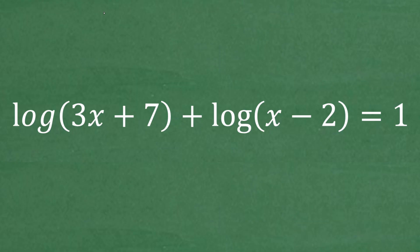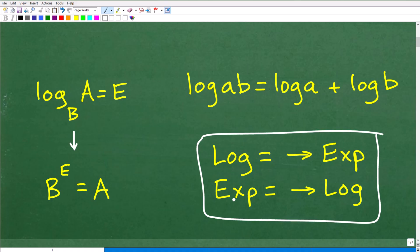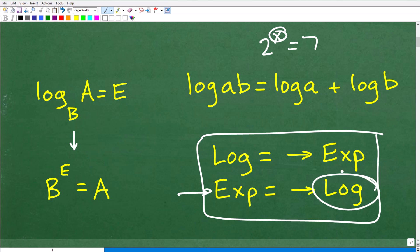Let's talk generally about what we need to know for this problem — basically, how do we solve a logarithmic equation. The first thing to understand is that when you solve an exponential equation, something like 2 to the x equals 7, this is an exponential equation because the variable is an exponent. When you have an exponential equation, you're going to use logarithms to solve it.